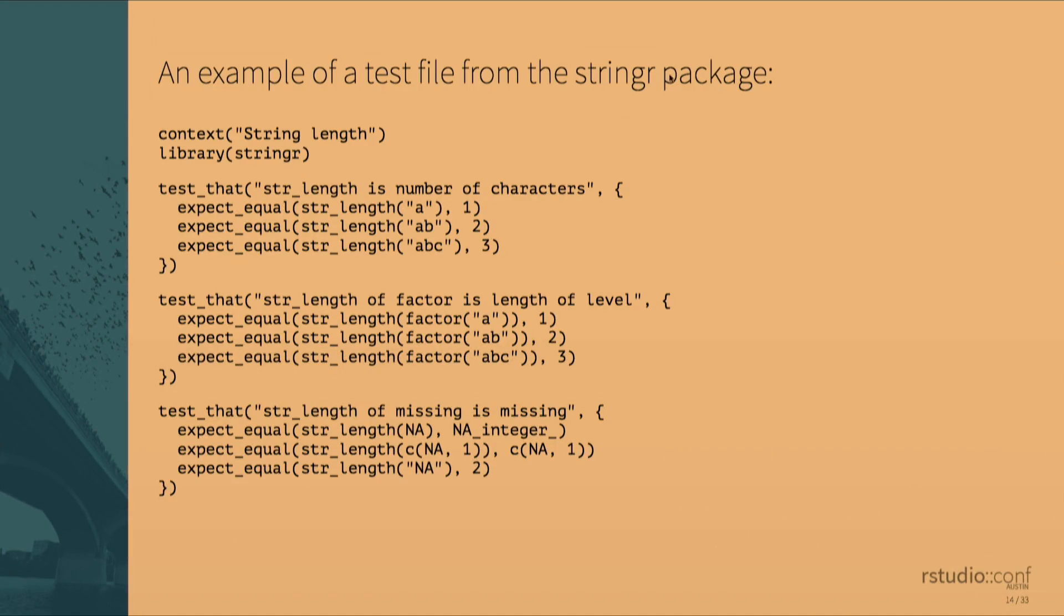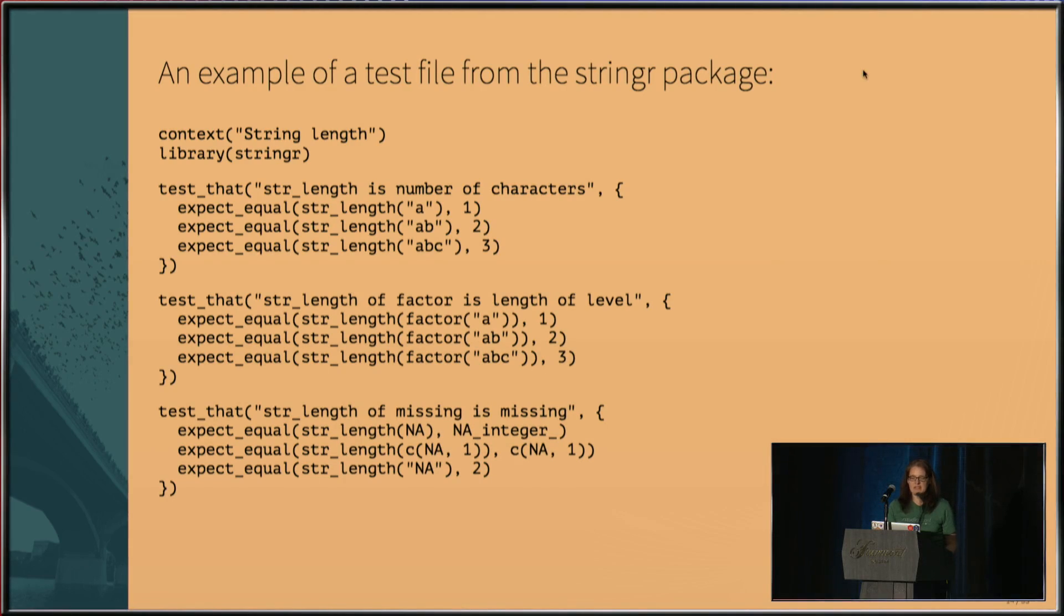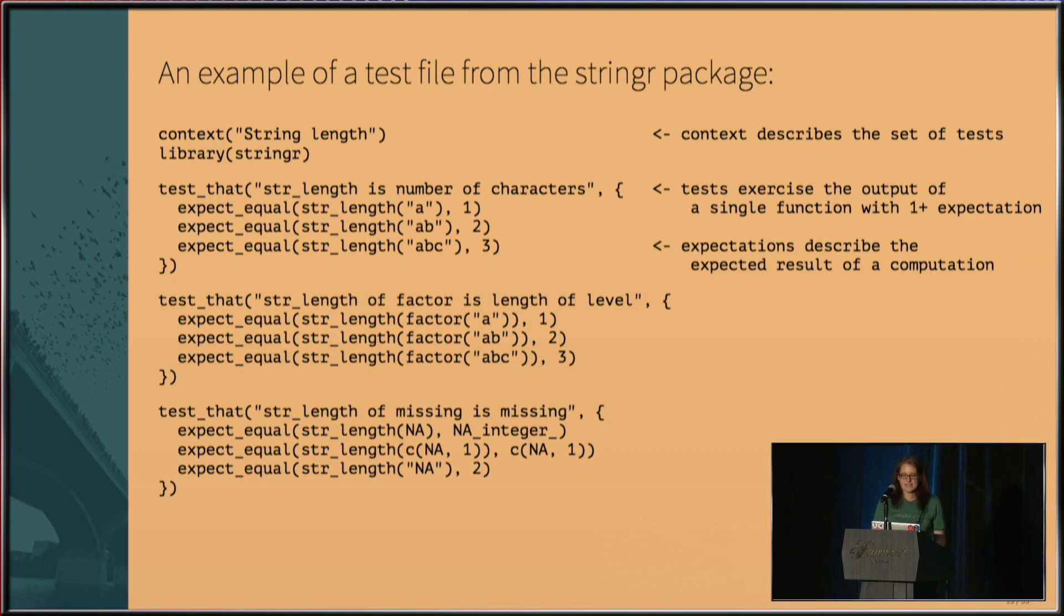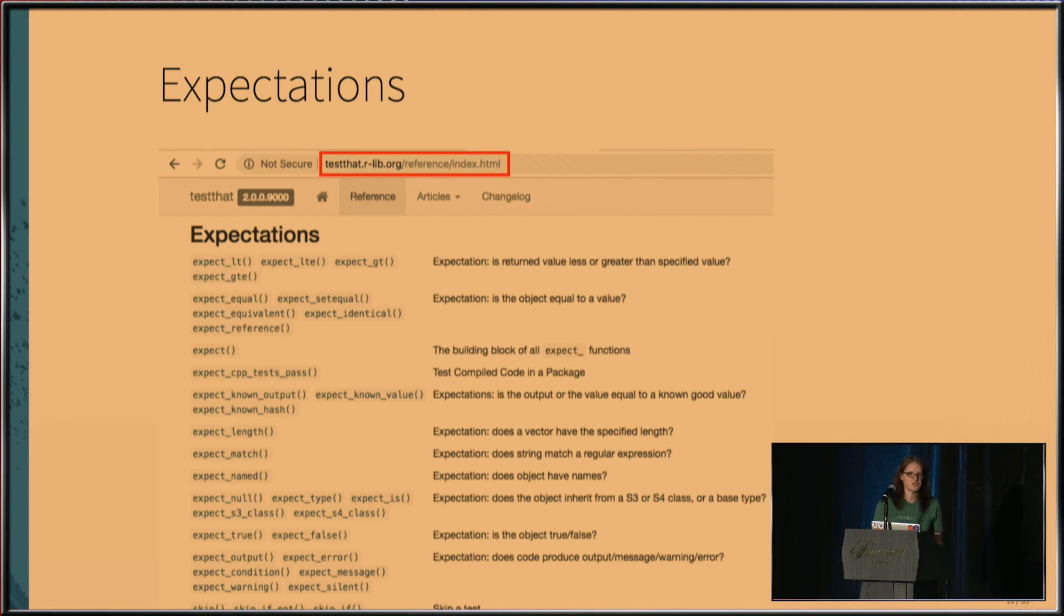So I'll give you an example here. This is from the stringr package. And this is taken straight out of Hadley's book. But this will give you an idea of what your tests are going to look like. At the top, you have a context, which is a description of the test that you're running here. And then you have each of these little sections. The test_that is the test itself. It's exercising the output of a single function with one or more expectations. And the expectations themselves describe the expected result of a computation. You can have multiple of them. Here you see they're all using expect_equal. But if you look at the documentation for testthat, you have a lot of different choices. You can test for a known error. You can test for matching. You can test for all kinds of things using these functions.